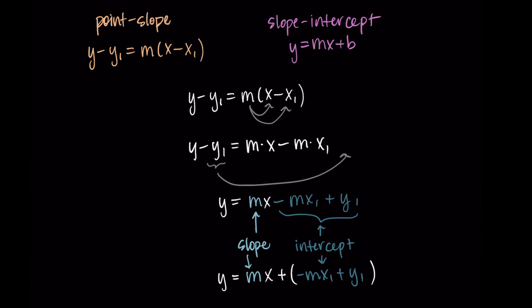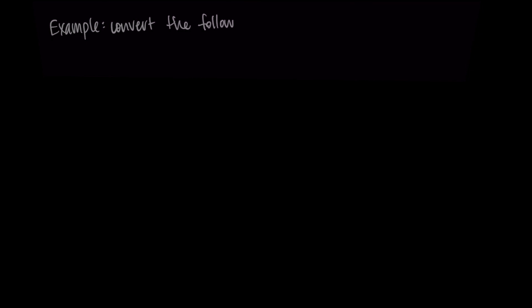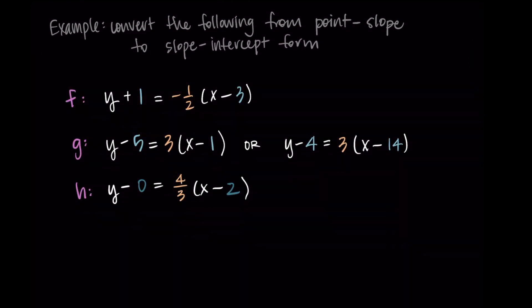These are basically the exact same steps we take every single time we do this conversion in a general way. It'll make more sense as we do the specific examples, and you'll see these steps repeated each time. For the examples, I'm going to use some equations of lines that we found in the point-slope form video. Here are our equations — f, g, and h — and let's go ahead and convert each of these to slope-intercept form.